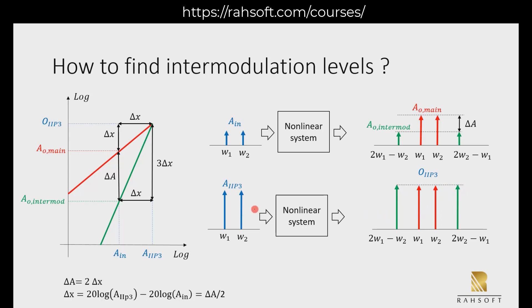I call this power AIP3 or PIIP3 at the input. At this point, if we apply this power to our system, the first and third order components are going to have the same power. We call this power level OIIP3, the output AIP3.